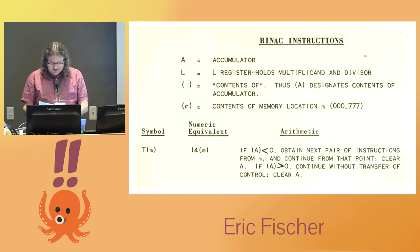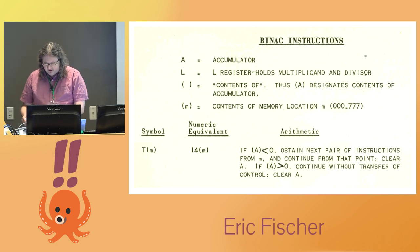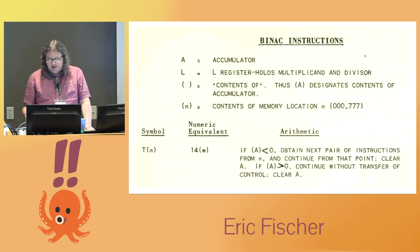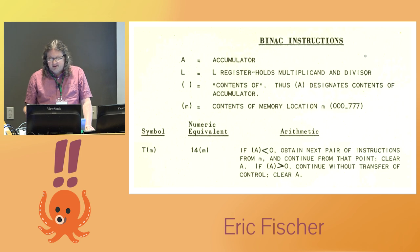Otherwise, it let control continue to the next instruction. This was meant for a specific usage pattern. If you wanted to do a task, say, ten times, your program counted how many times it had done it so far and then subtracted ten. If the result was negative, the task wasn't done yet, so it jumped back to do another round.